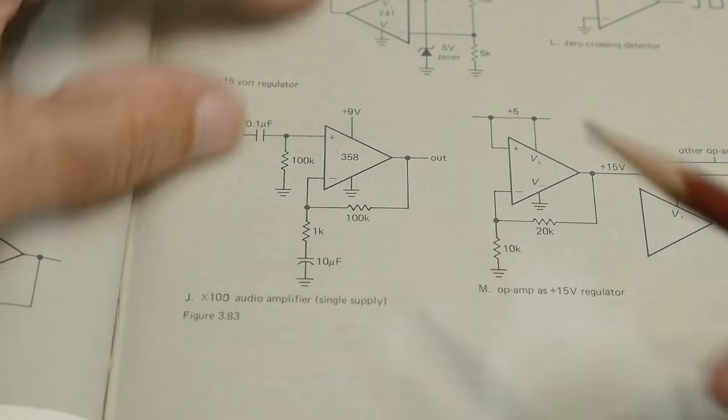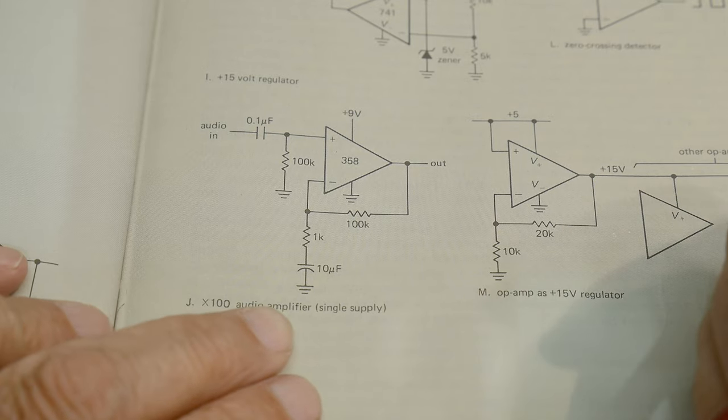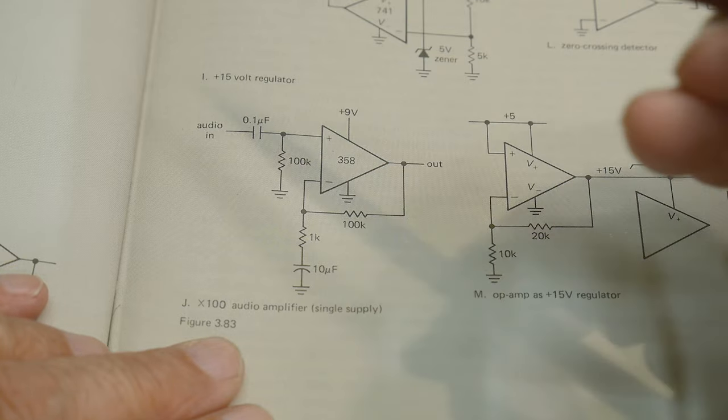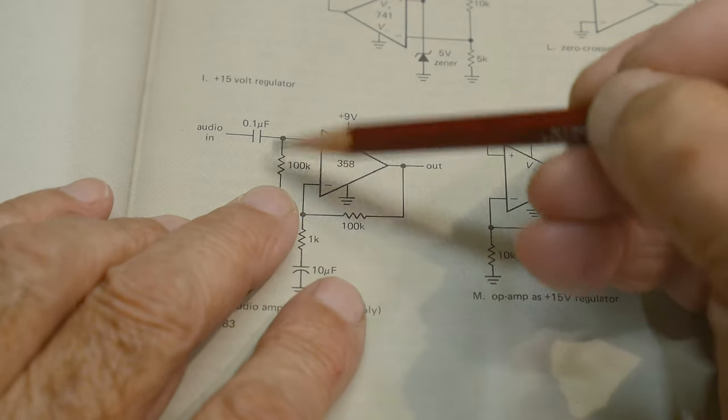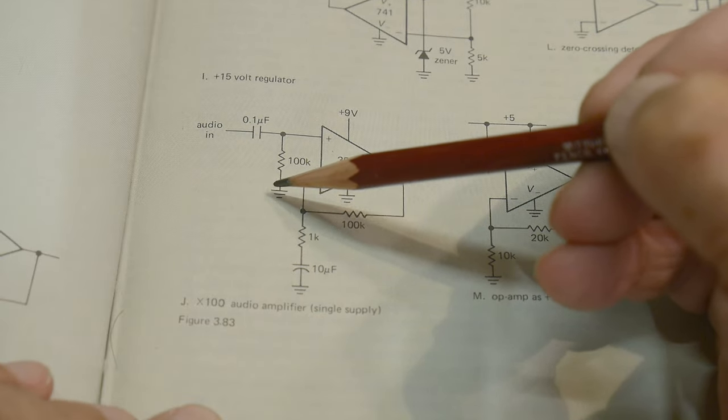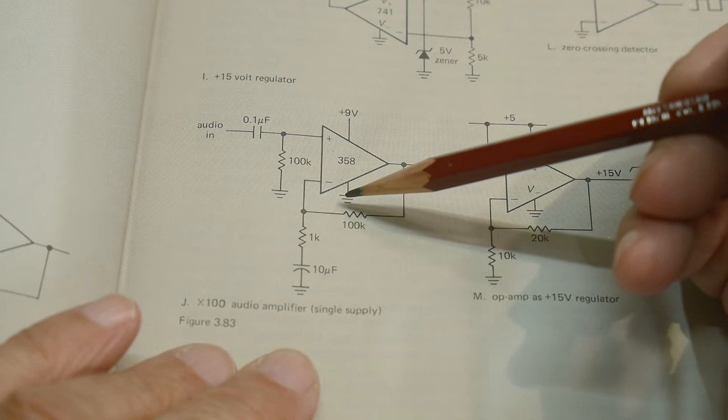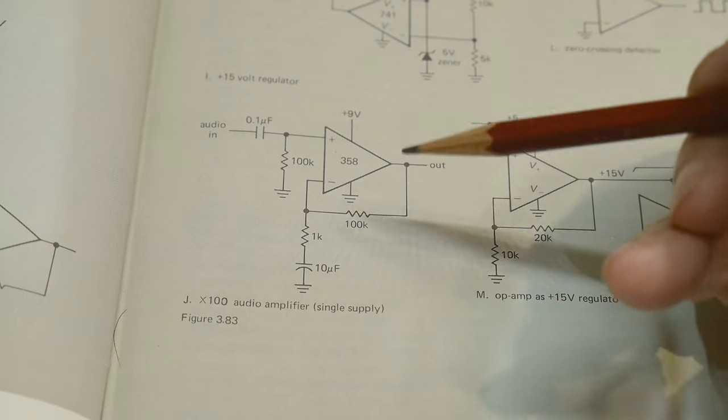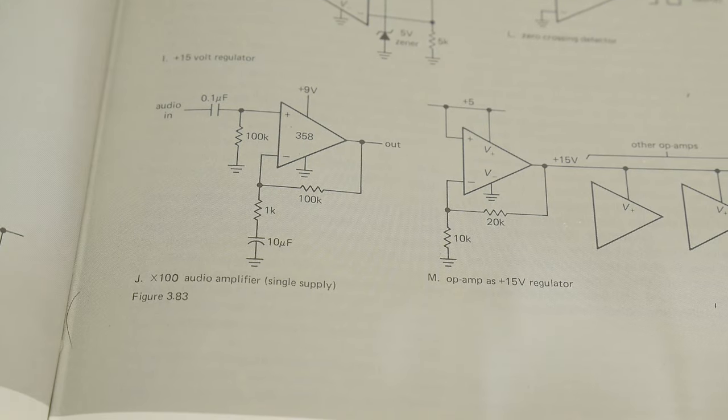Alright. What's wrong with this one? 100 times audio amplifier, single supply. I wonder if that's a clue, single supply. Yeah, single supply. So this can't be referenced to ground. It has to be referenced to something halfway between ground and plus nine. So that's going to be the error right there.